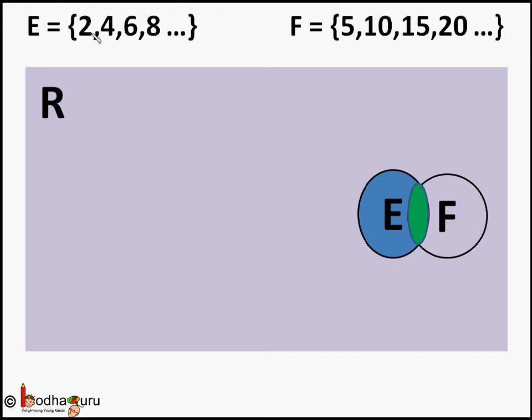Say E is a set of even numbers like 2, 4, 6, 8, 10 and so on, and F is a set of multiples of 5 starting from 5, so numbers like 5, 10, 15, 20, 25 and so on.